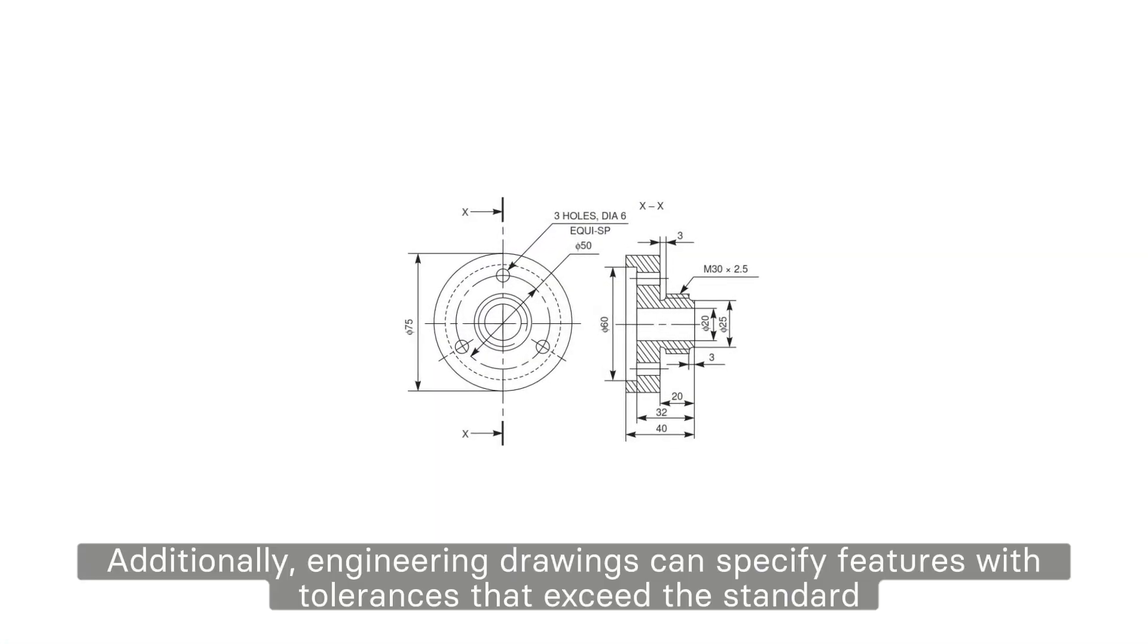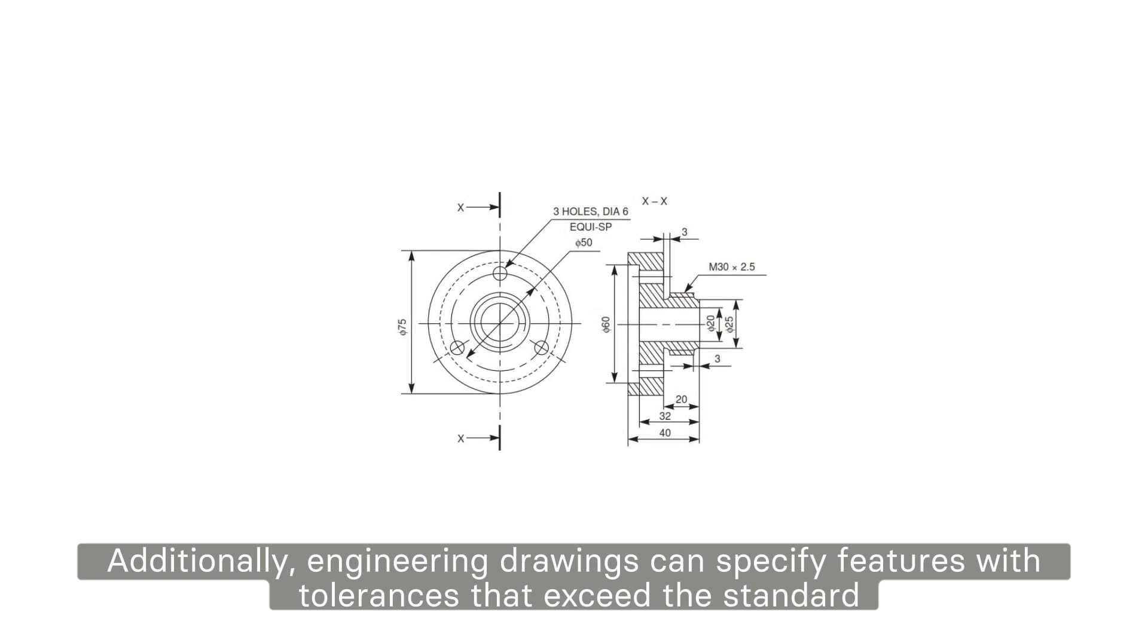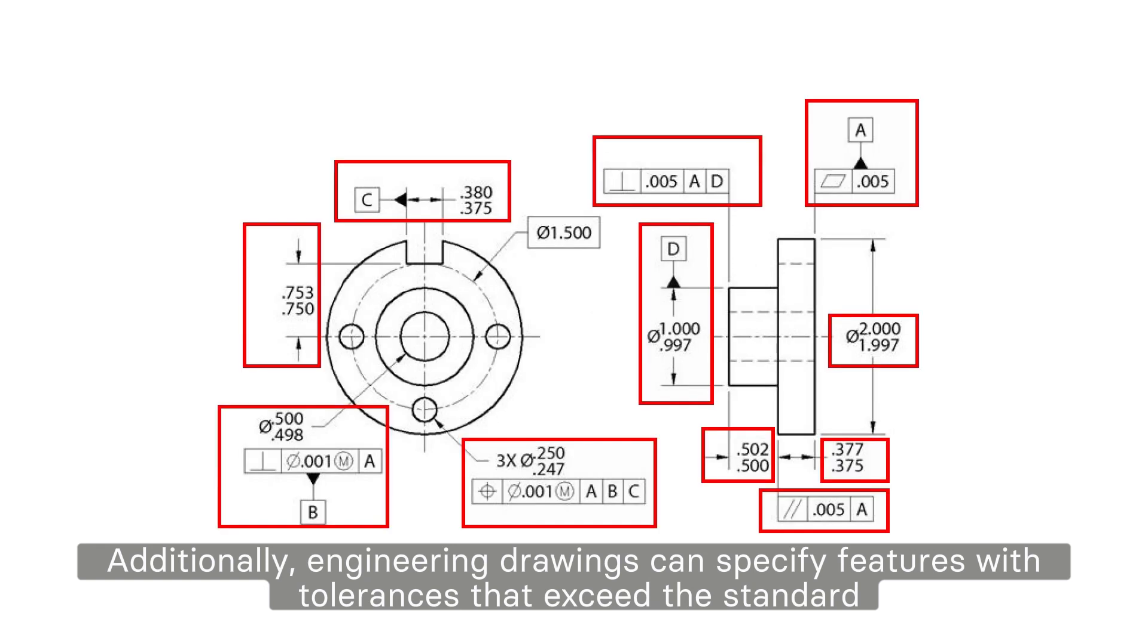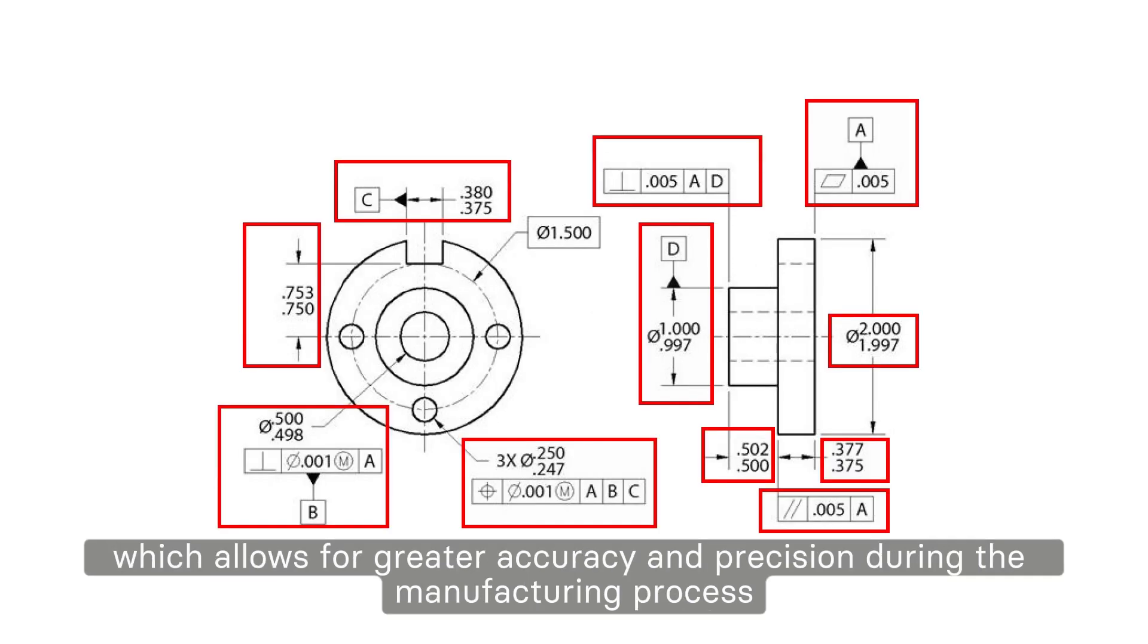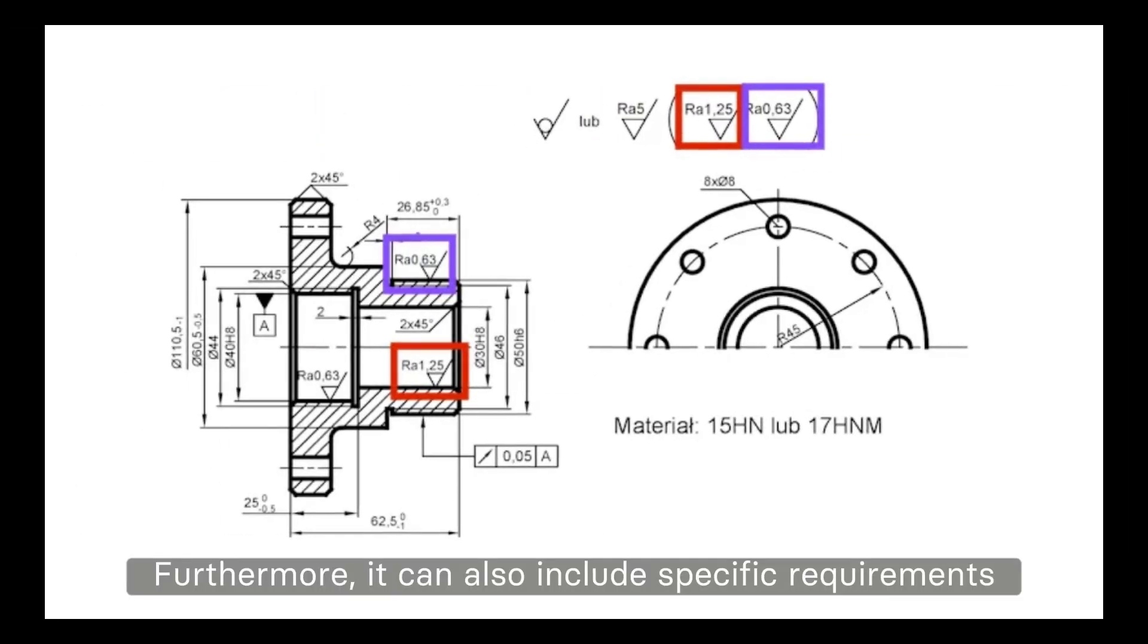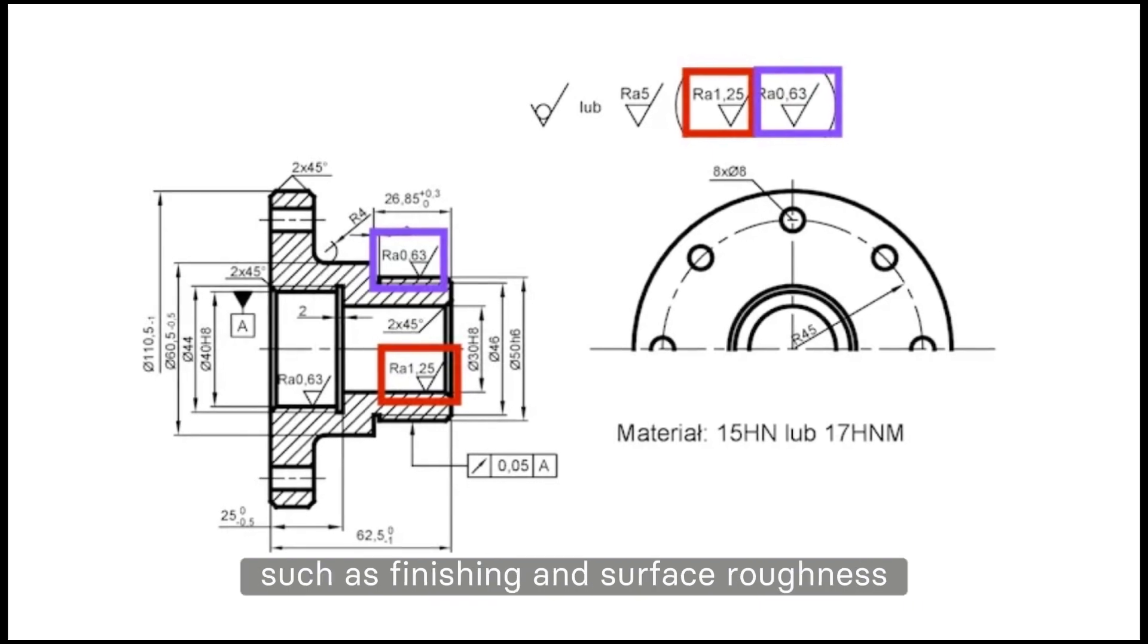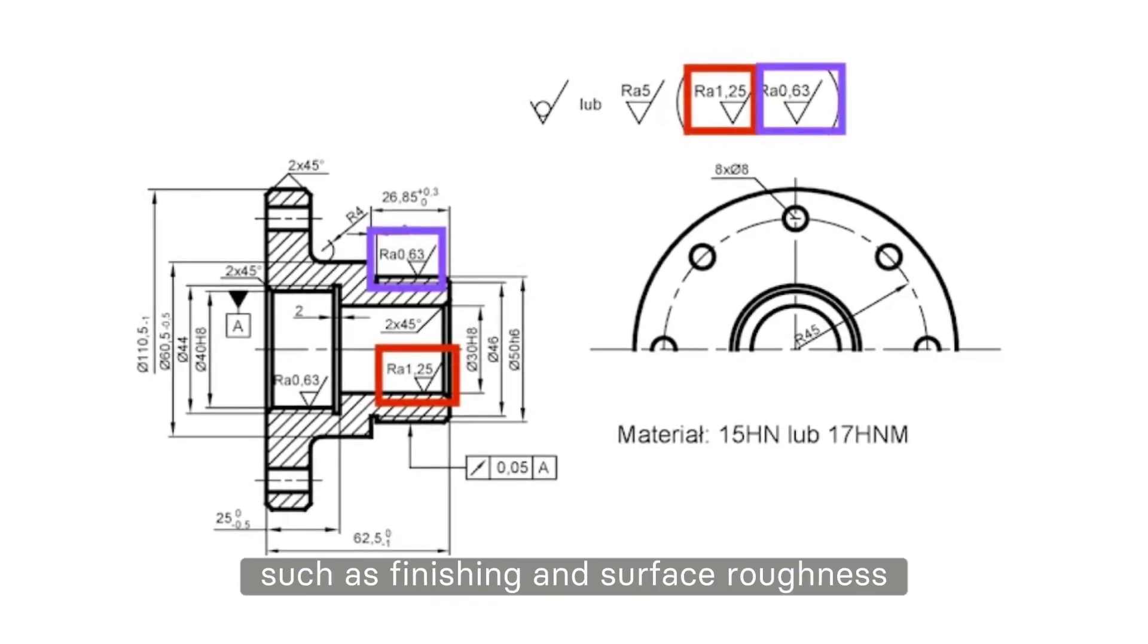Additionally, engineering drawings can specify features with tolerances that exceed the standard, which allows for greater accuracy and precision during the manufacturing process. Furthermore, it can also include specific requirements, such as finishing and surface roughness, which impact the final product's quality.